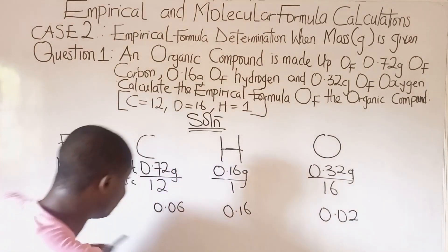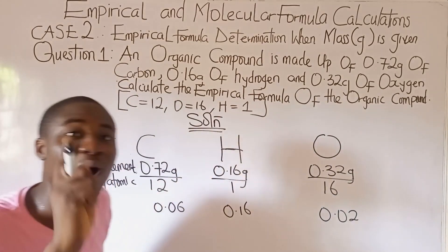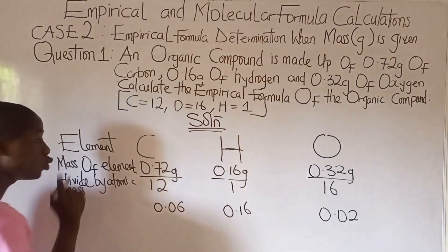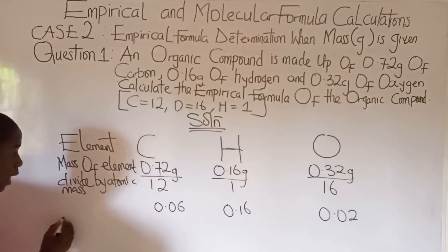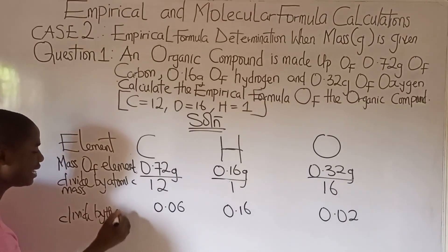This is the number of moles we've gotten for all the elements forming the organic compound. Now next step, which is almost the last step, is to divide by the smallest.